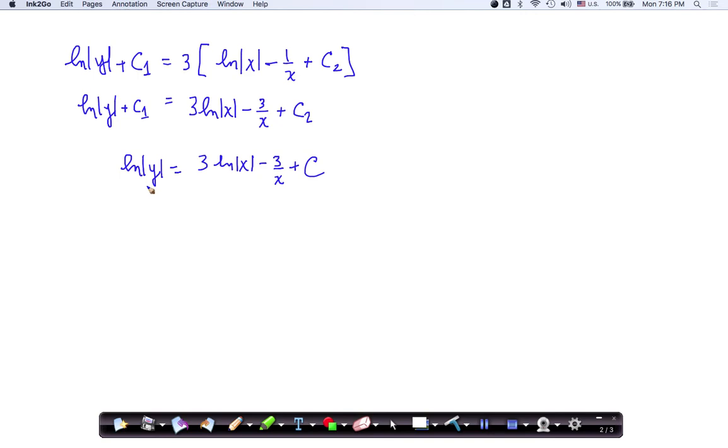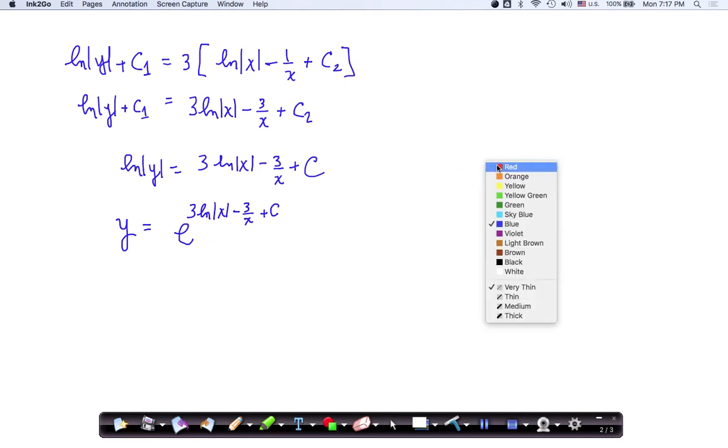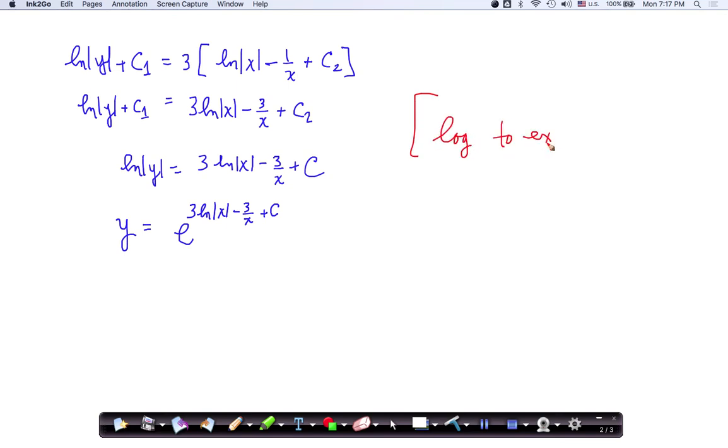Now I want to get y by itself, so I'm going to convert it to exponential form. That means I'm going to raise everything on the left side here to base e. So this whole mass is what I'm raising to base e. Just make a quick note that's going from log form to exponential form. This is something that hopefully you have learned in algebra 2 or in pre-calculus. Now I can stop the work right here, and I can say this is my general solution.